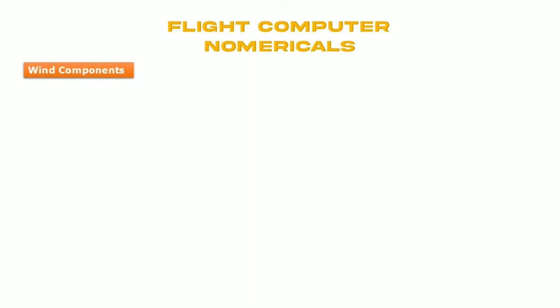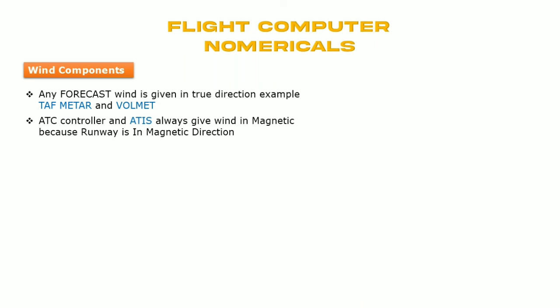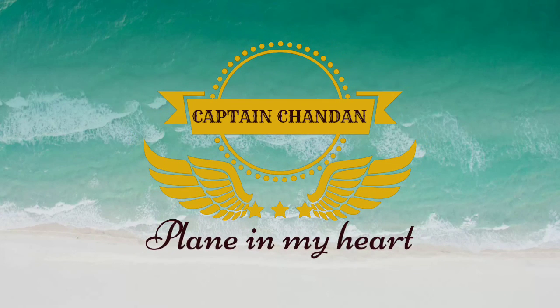Now we'll find the wind component — we already discussed this in a previous video, please watch for detailed information. Forecast wind can be given in two directions. ATC controllers and ATIS always give wind in magnetic because runways are in magnetic direction. Kindly watch my previous video where I covered the wind component chapter in detail. Thank you so much for watching — God bless you.